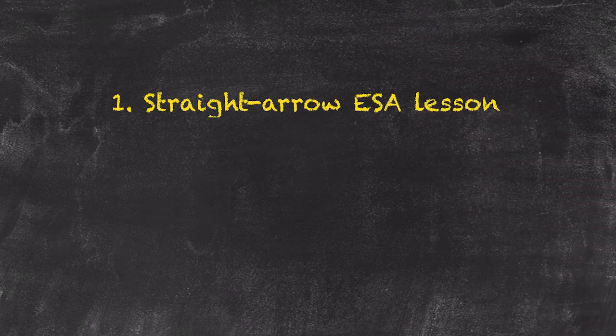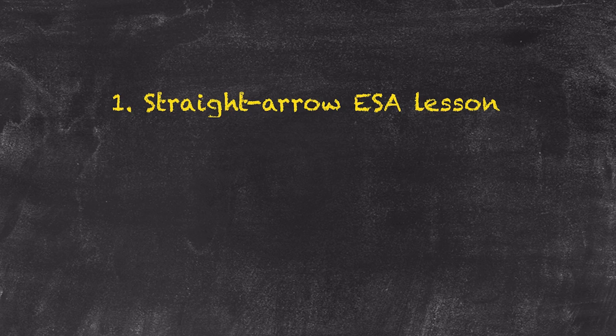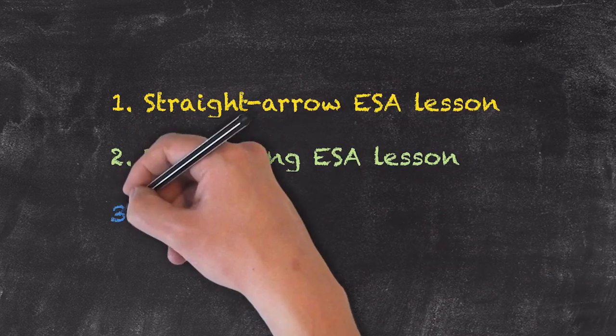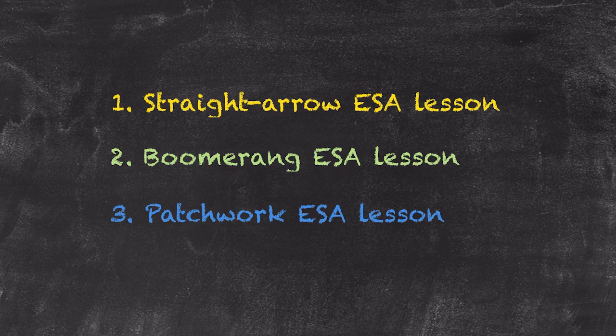This particular methodology — running through E, S and A in sequence — is known as a straight arrow ESA lesson. If every single lesson was a straight arrow ESA lesson, it is quite possible that students would be able to predict what is coming up next. Whilst this is good for lower level students, it could potentially become a little boring for higher level students. So Harmer generated two other types of ESA lesson: the boomerang lesson and the patchwork lesson. We're going to look at each of these types in more detail.